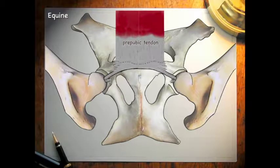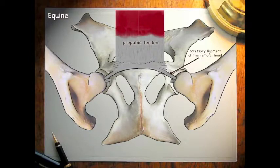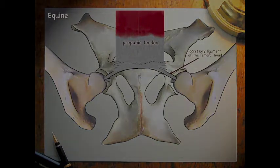The prepubic tendon is the tendon of insertion for the rectus abdominus muscle, but also serves as an attachment for the abdominal oblique muscles, the gracilis muscle, and the pectineus muscle. In the horse, from either side the prepubic tendon gives off the accessory ligament of the femoral head, which runs in the pubic groove on the skeleton. Together with the ligament of the femoral head, this helps secure the femur in the acetabulum and prevents luxation.